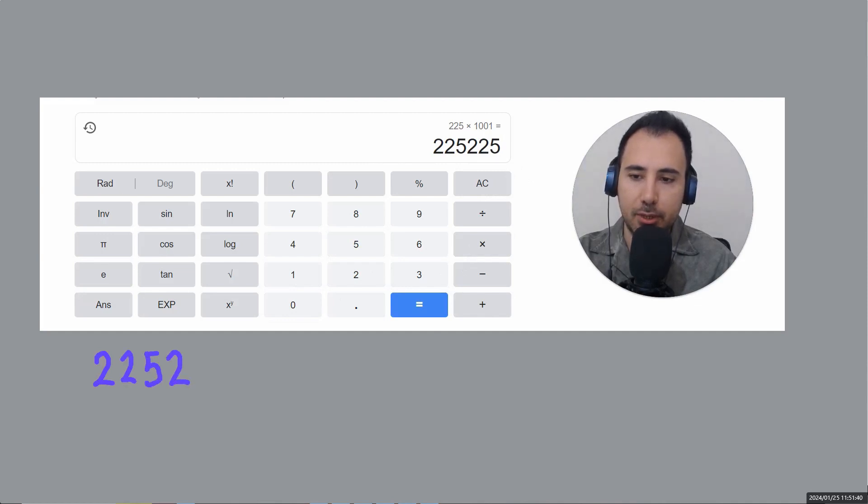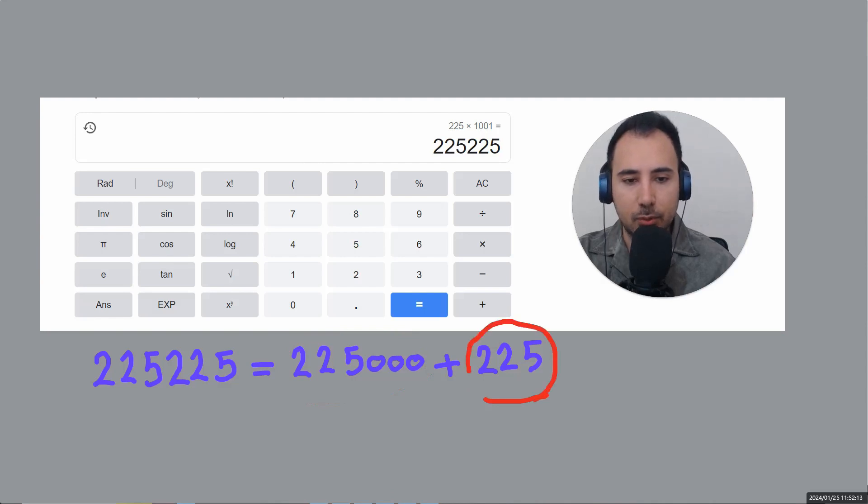Let me make this larger. So two two five, two two five. Right? I could write this number as two two five with three zeros plus two two five. If you're not sure of this, write it vertically and try it before you watch the rest of the video. And then you see now this is two two five five, and this is a thousand times of this. So for example, if I call this one x...